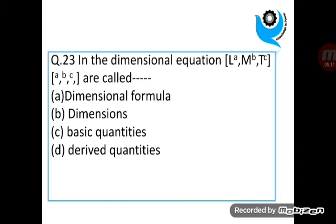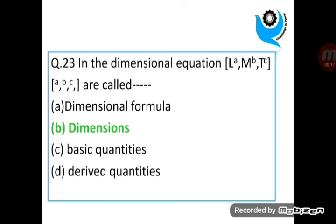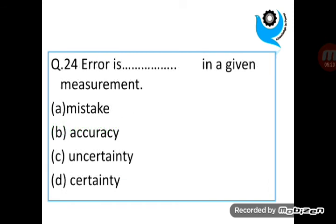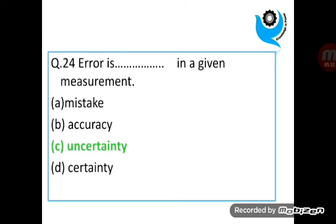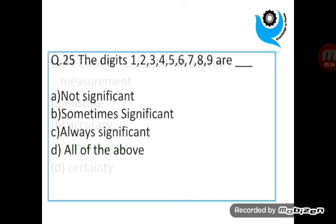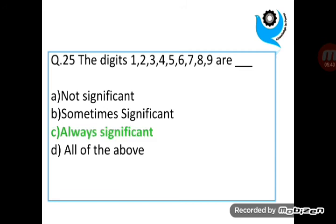Question 23. The dimensional equation... Question 24. Error is blank in a given measurement. Uncertainty. Question 25. The digits 1 through 9 are always significant.